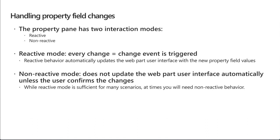How do you handle property pane field changes? The property pane has two different modes. By default, the first mode is reactive — as you make changes inside different fields, those changes are applied live to the corresponding properties they're attached to. The other option is non-reactive, where it does not update the web part user interface automatically unless the user confirms the changes — similar to the traditional web part editing experience where you had to click 'Apply' to write changes to the properties.